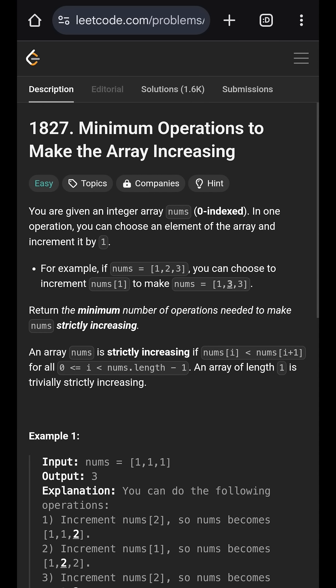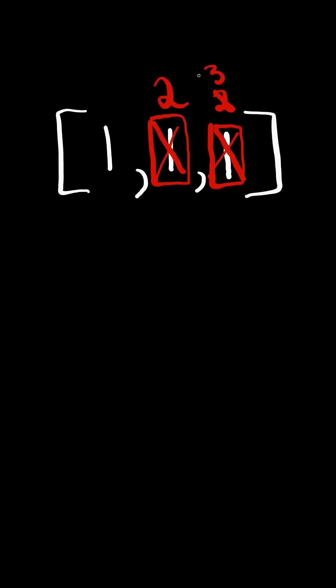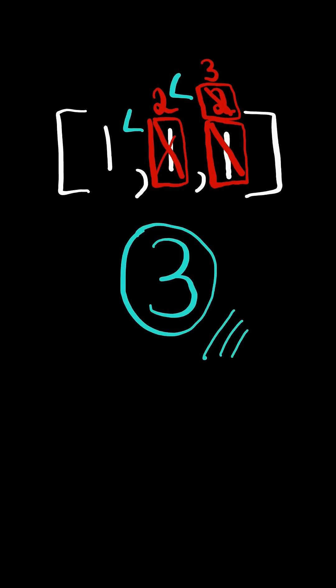Minimum operations to make the array increasing. Given a list of numbers, in one operation you can choose a number and increase it by one. Return the minimum number of operations to make the list strictly increasing. In this case it took a total of three operations.